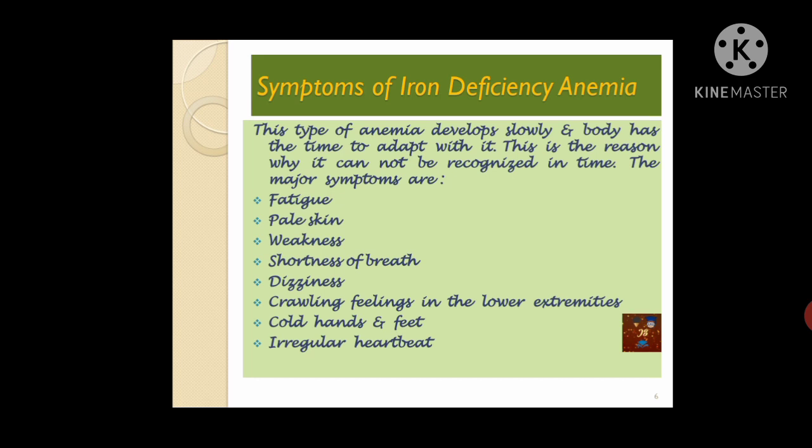Irregular heartbeat is another symptom. We know the average is about 72 to 80 beats per minute in an adult, but in patients suffering from iron deficiency anemia there is an irregular heartbeat — sometimes the palpitation is very high and sometimes very low. Brittle nails means the nails are not steady; they are very fragile and not strong enough.